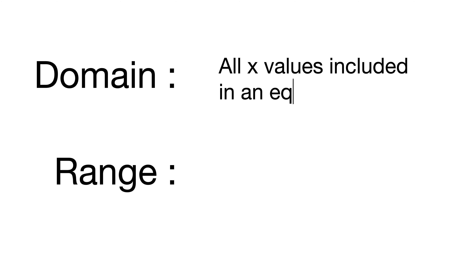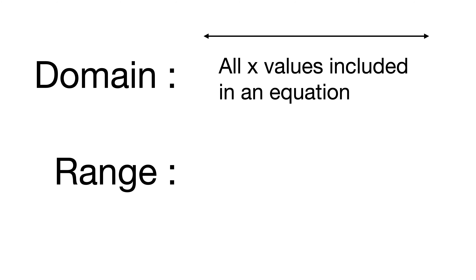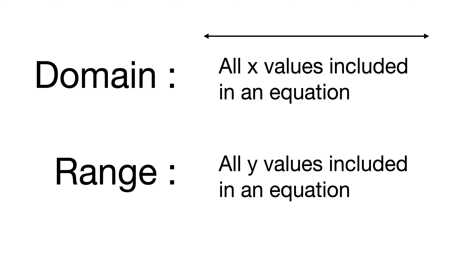Domain is going to be all of the x values included in an equation. The x axis goes from left to right, so domain covers all the x values going from left to right. Range is the opposite — it's going to be all the y values included in an equation, and that's the y axis which goes up and down.